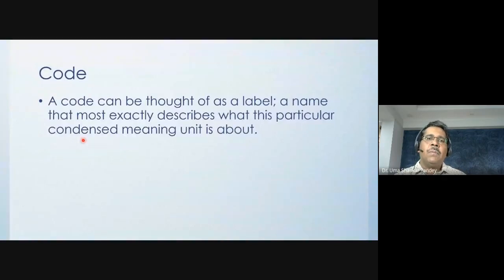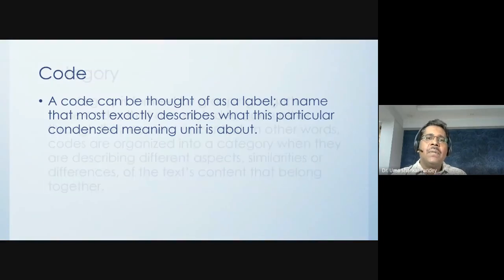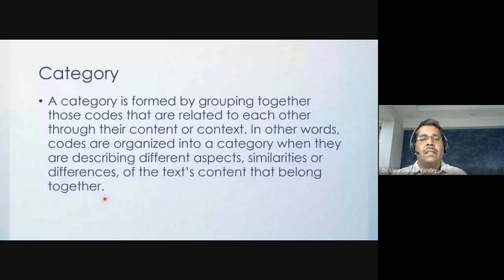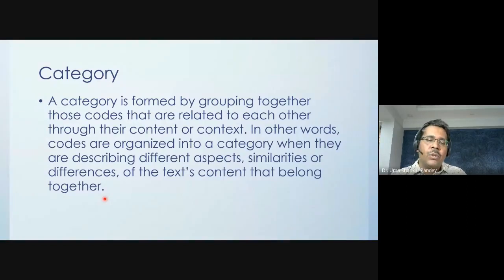A code is more of a label — a name that exactly describes what a condensed meaning unit is about. It can be any number of words. It can be based on existing code books or done inductively. A very crude example would be coding content as political, business, or sports, but we will see much more sophisticated kinds of codes.